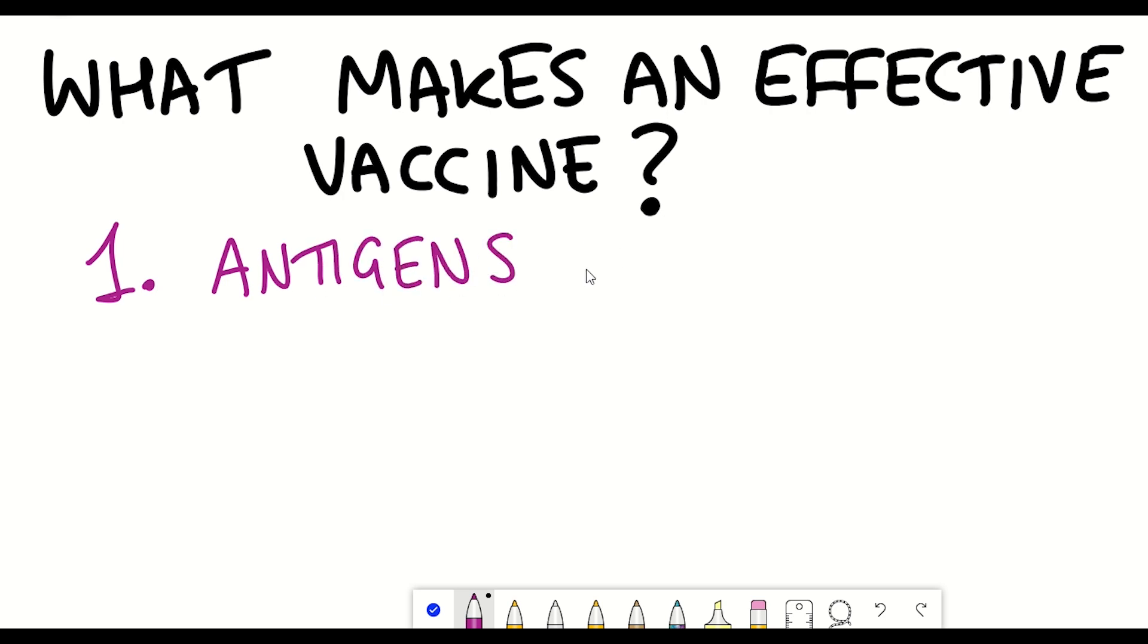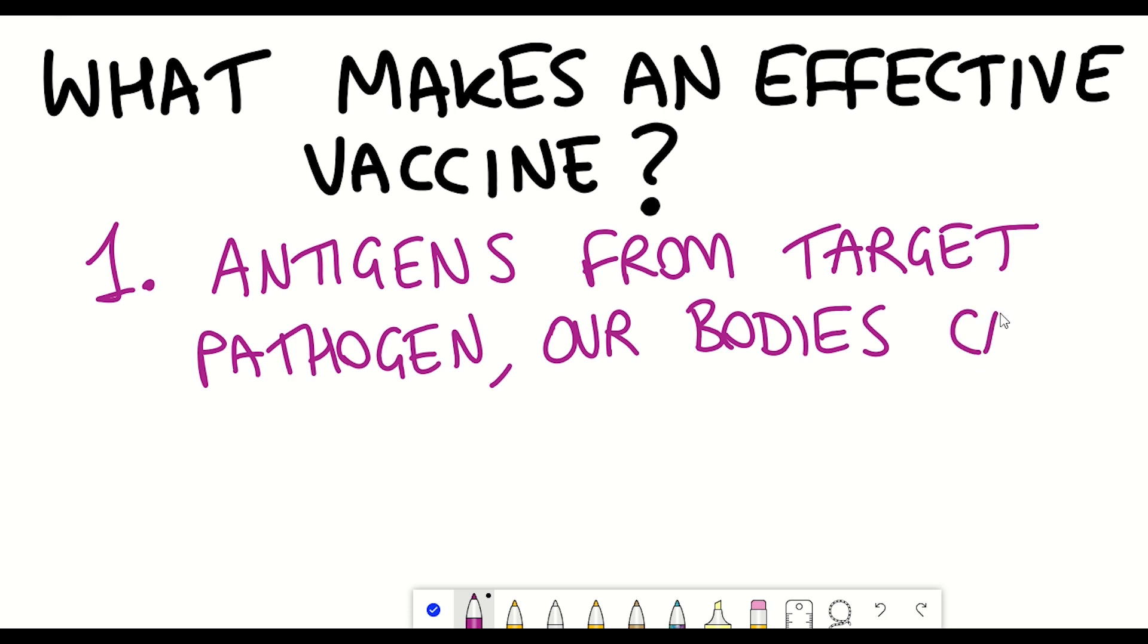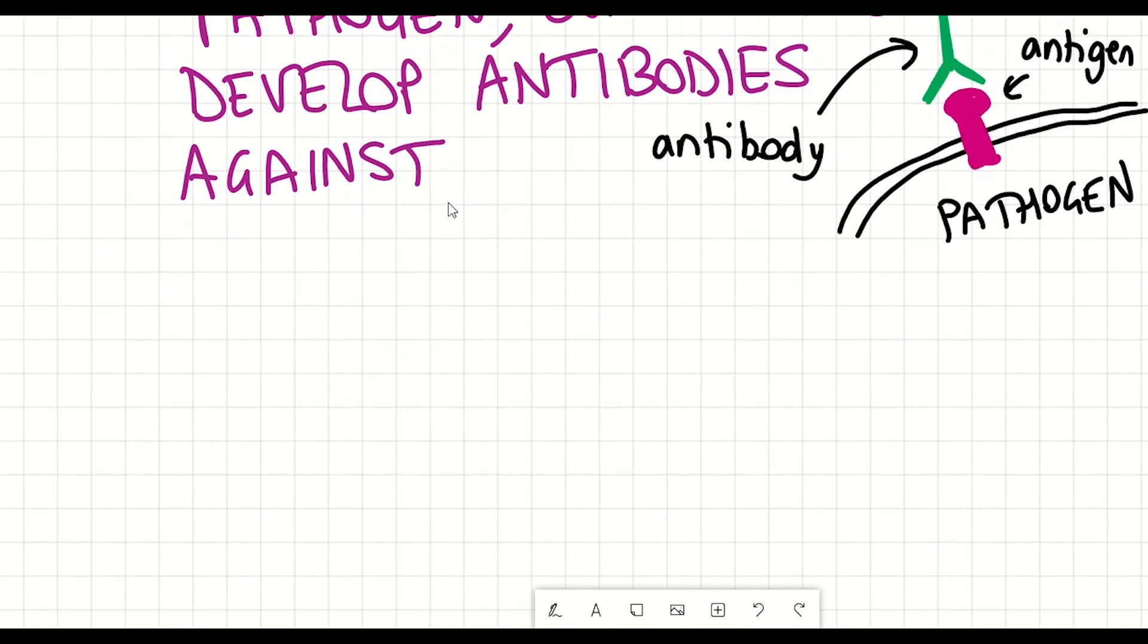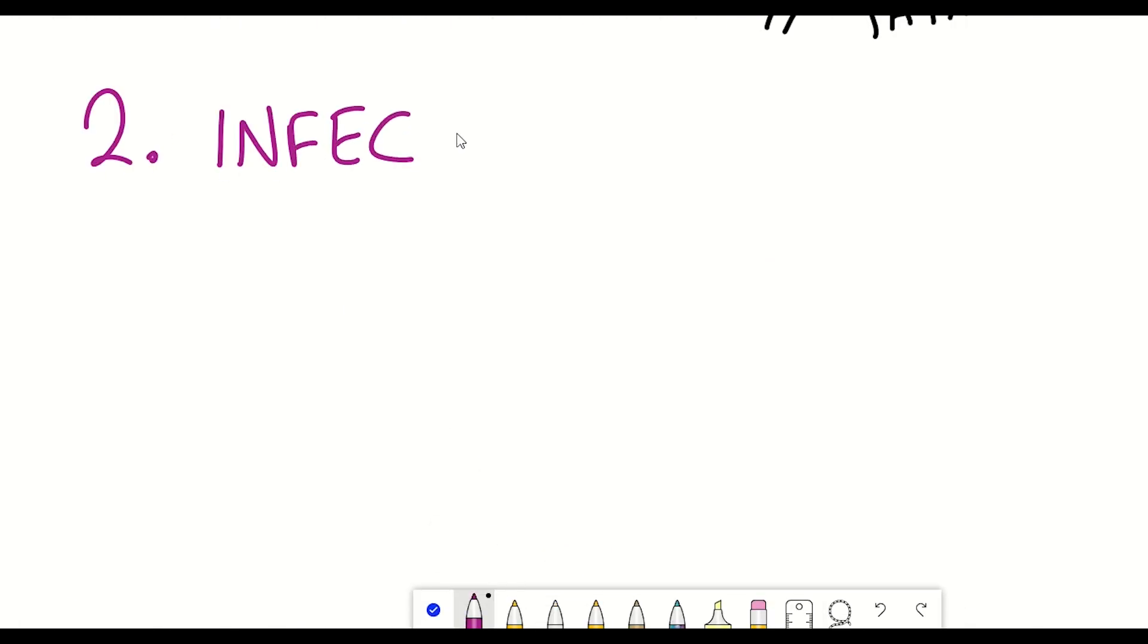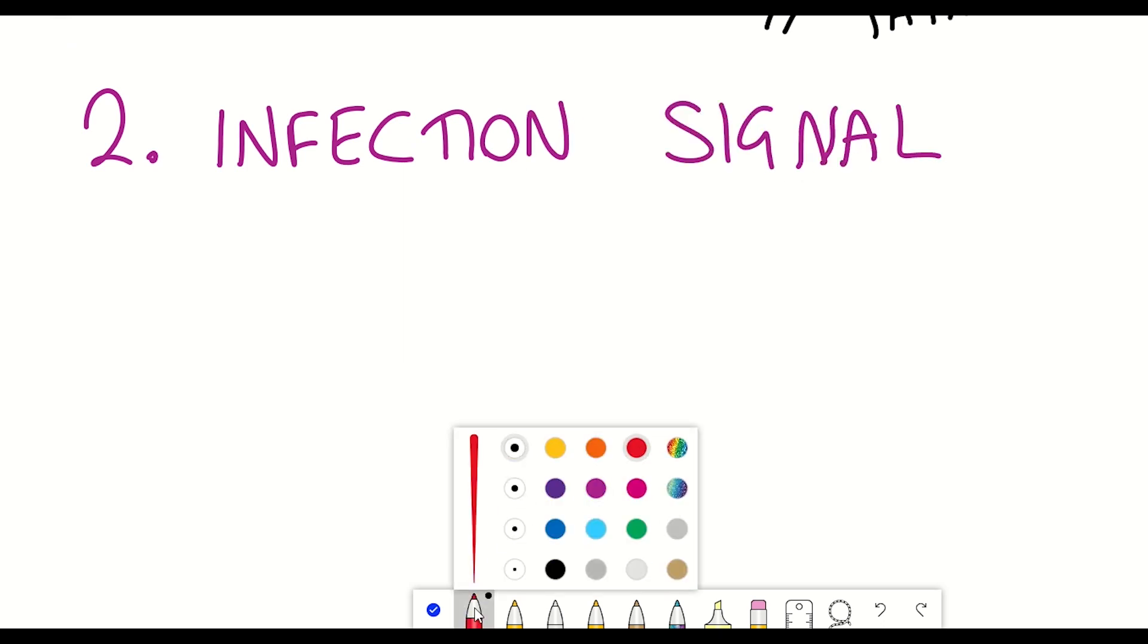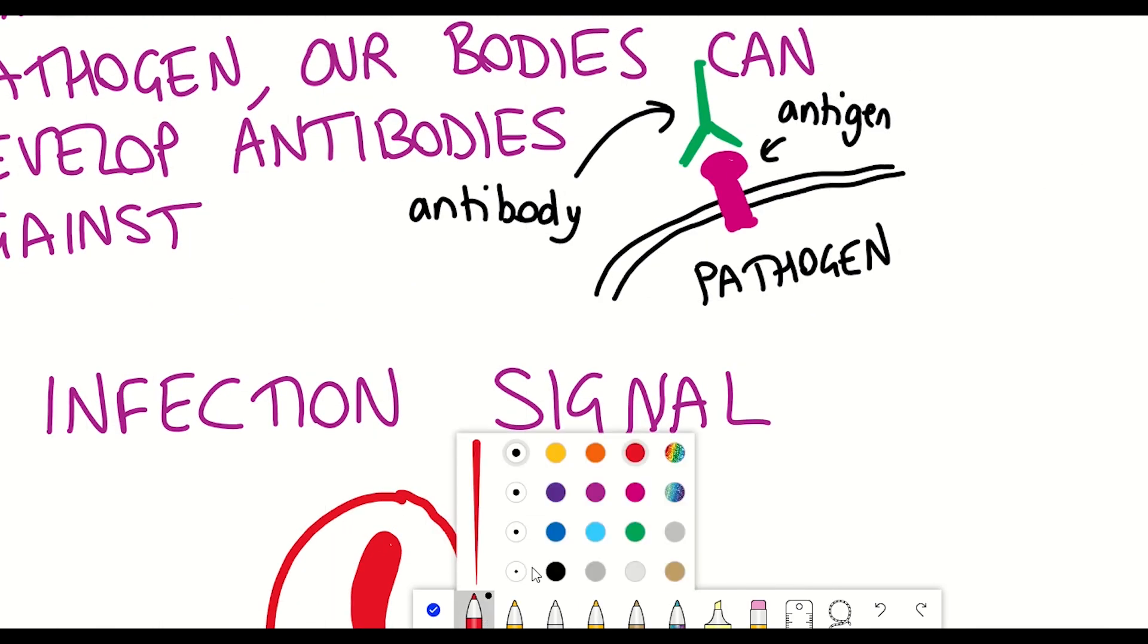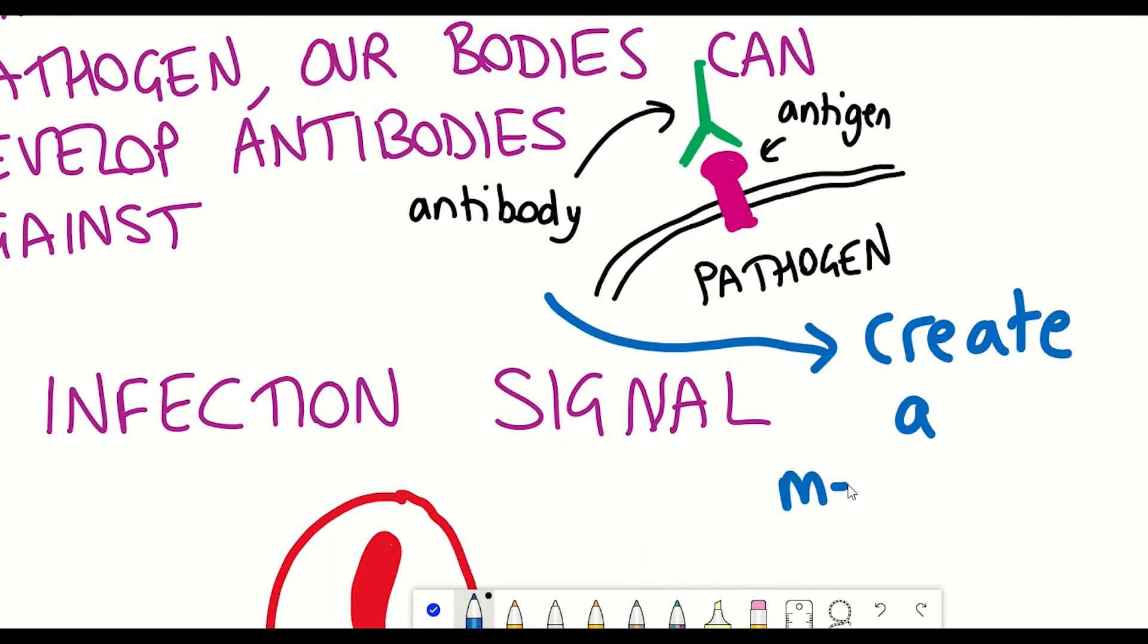Firstly, it requires antigens from the target pathogen that our body can develop antibodies against, and so these antigens can be provided by the vaccine itself or generated by the vaccine recipient on receiving the vaccine. And then secondly, it needs an infection signal that alerts our bodies and activates the host immune system to develop these different antibodies and to create a memory against this target pathogen so that if it comes again into our bodies we're ready to tackle it.